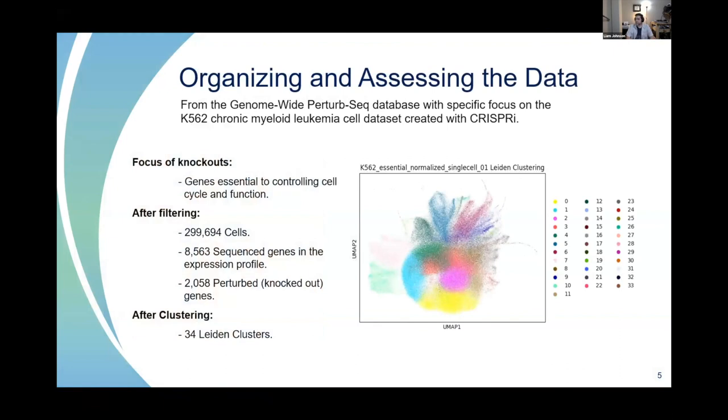After assessing the data, I went with one of the three sub-datasets and began to filter it. After that, I was left with just shy of 300,000 cells that tracks 8,500 sequenced genes in its expression profile, with 2,058 genes systematically knocked out. This covers everything they could track in these K562 chronic myeloid leukemia cells.